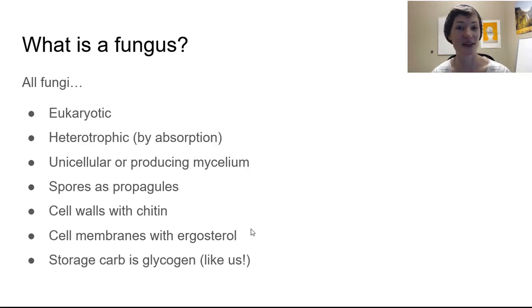Chitin is a common compound found in arthropod exoskeletons, so the skeletons of crustaceans and insects. You would find chitin there. And this is part of this clue that fungi are actually more closely related to animals than they are to most of these other groups. So cell walls with chitin.